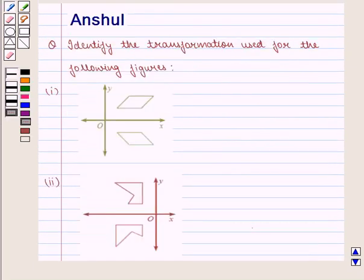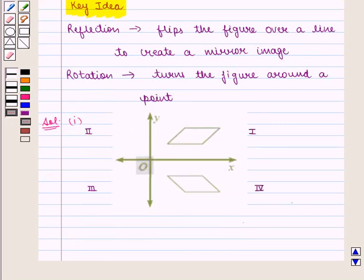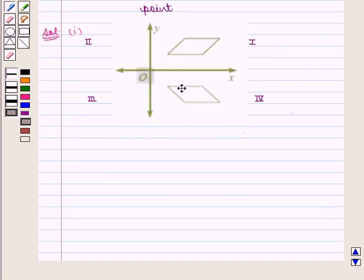In this question we have to identify the type of transformation used in the given figures. In the first part of the question, we are given a parallelogram in the fourth quadrant. We can see the first, second, third, and fourth quadrants. The image in the fourth quadrant is also a parallelogram.